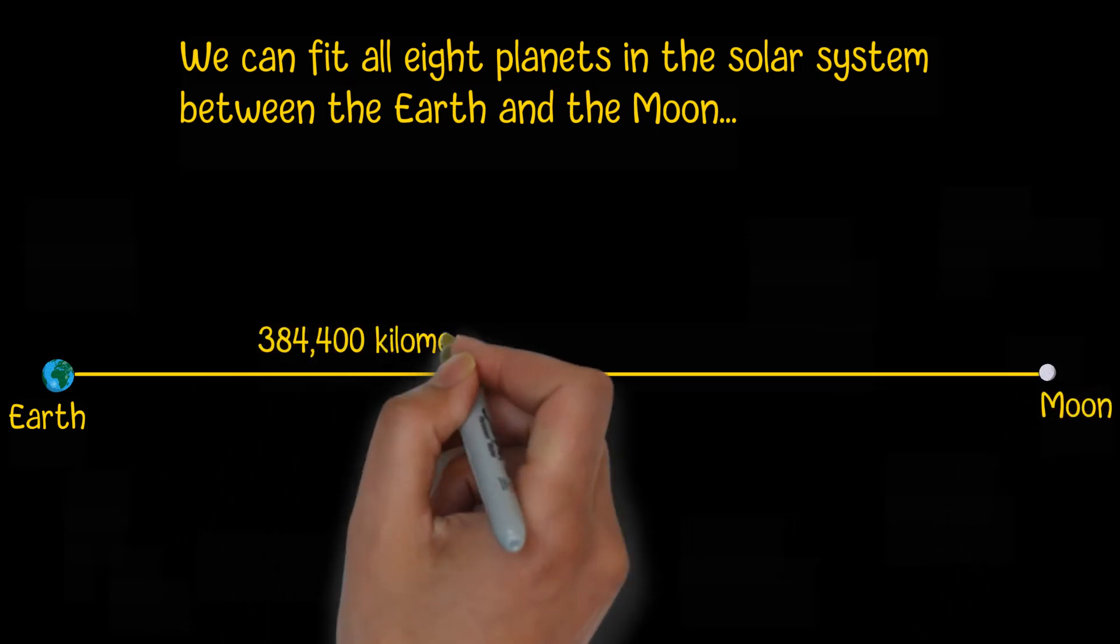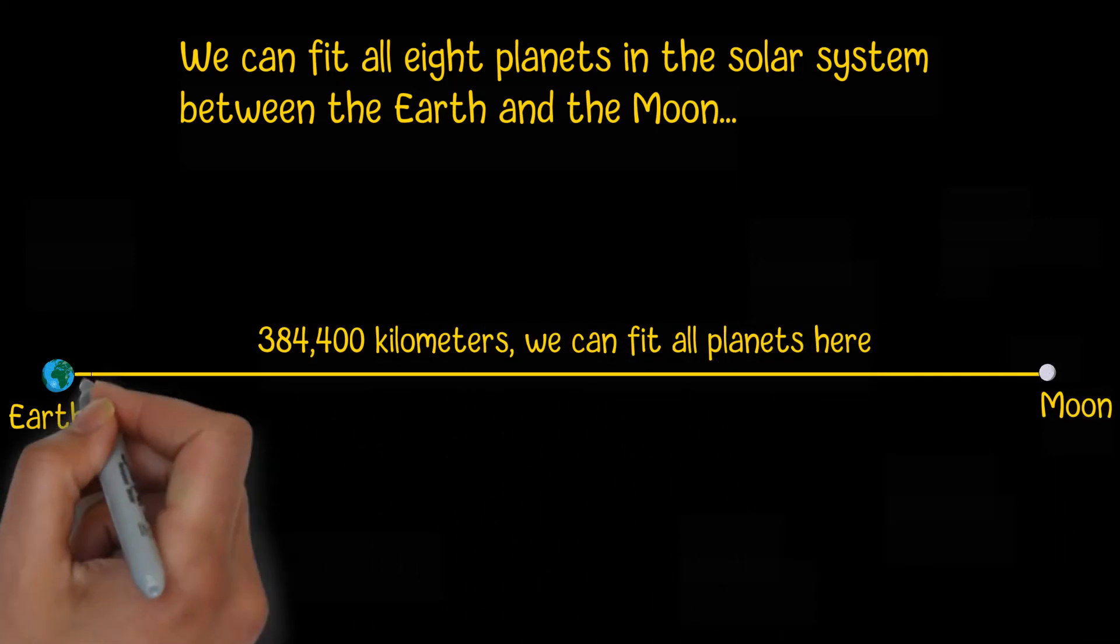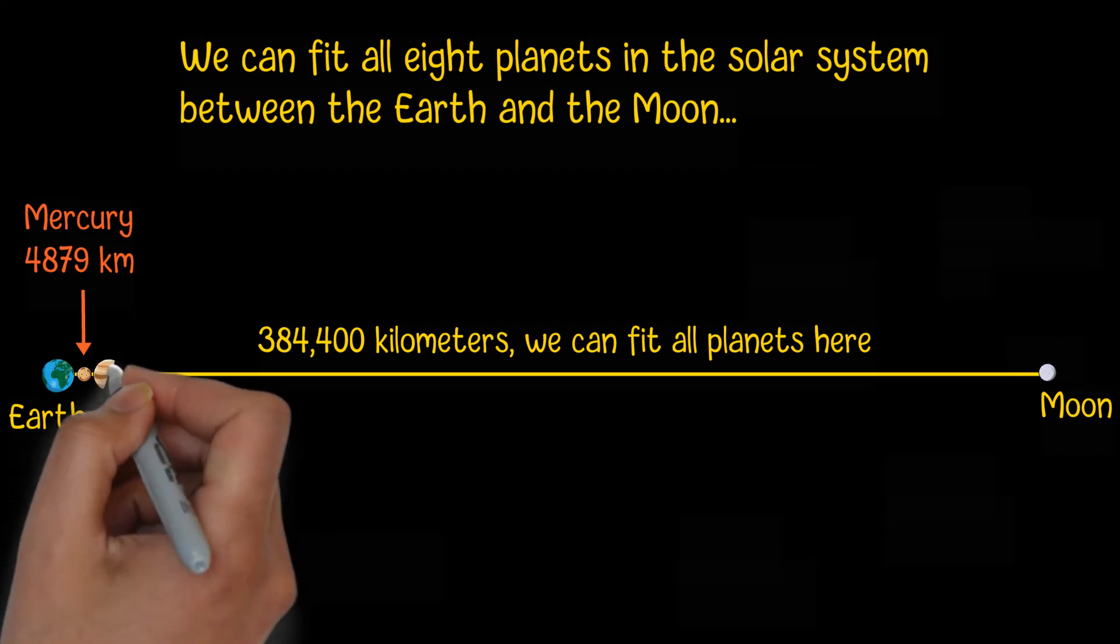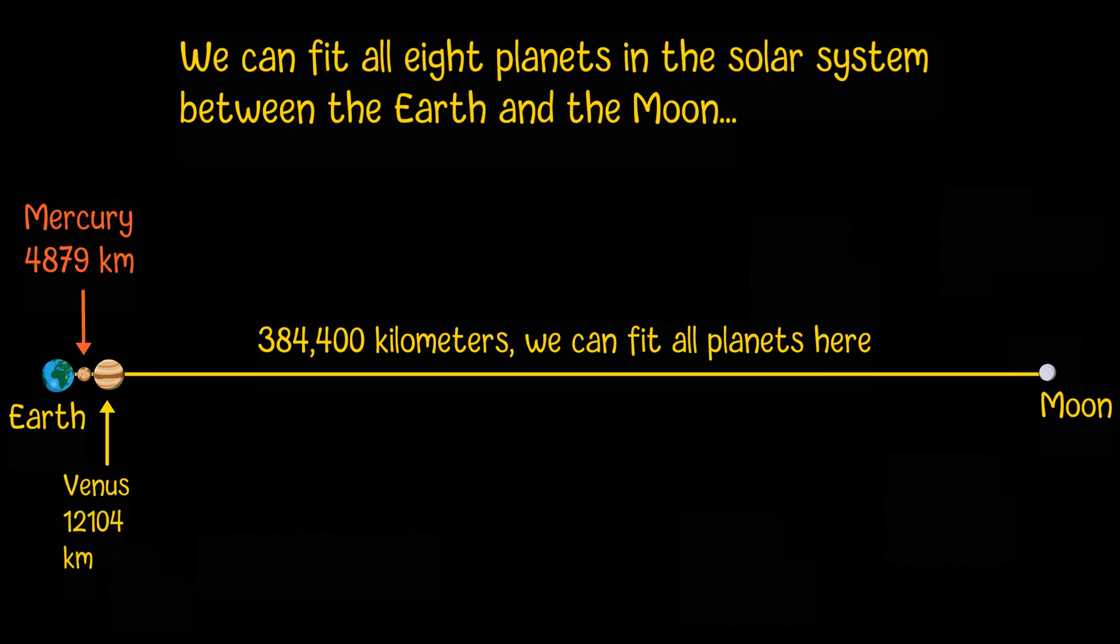We put all planets side by side into this gap using this sequence: Mercury with a diameter of 4,879 kilometers, Venus with a diameter of 12,104 kilometers, and Mars with a diameter of 6,771 kilometers.